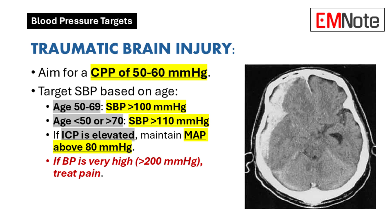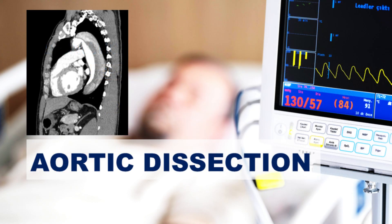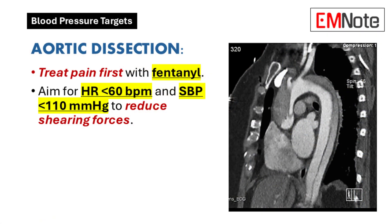In cases of severe hypertension exceeding 200 mmHg, pain management should be prioritized. For aortic dissection management, analgesia should be achieved with fentanyl administration. Heart rate should be maintained below 60 beats per minute, and systolic blood pressure should be reduced below 110 mmHg to minimize shearing forces.